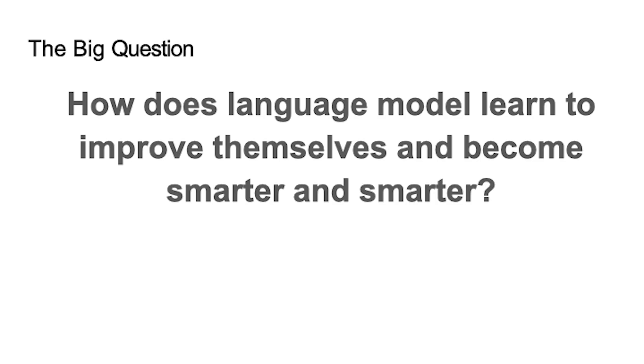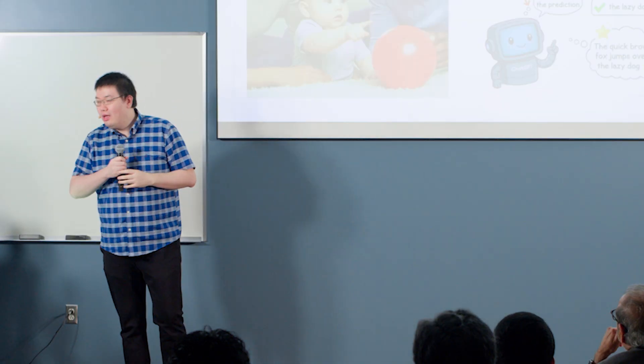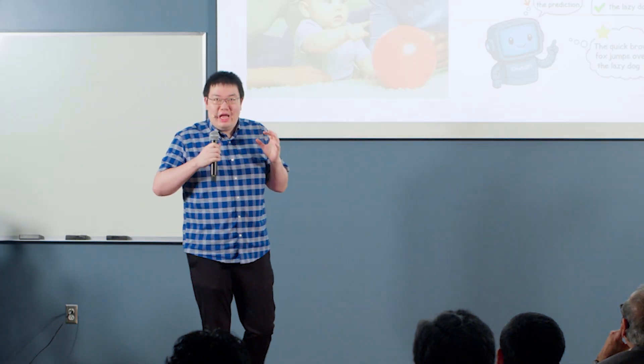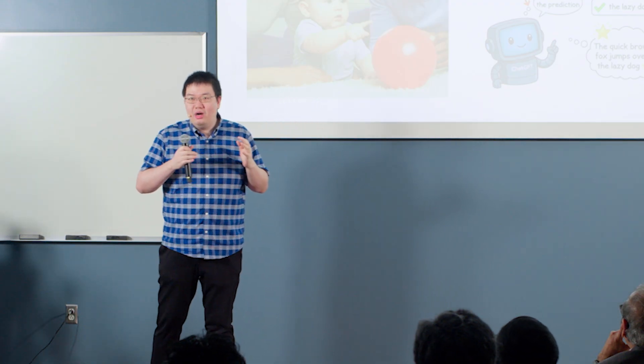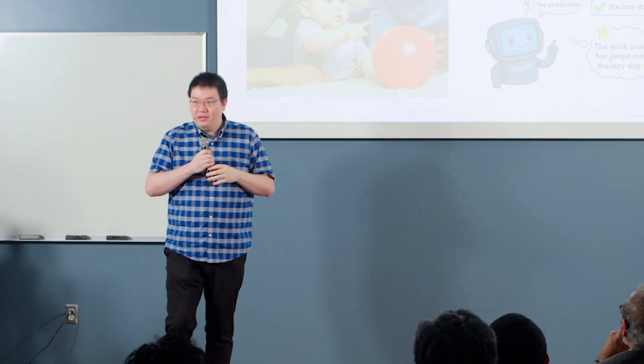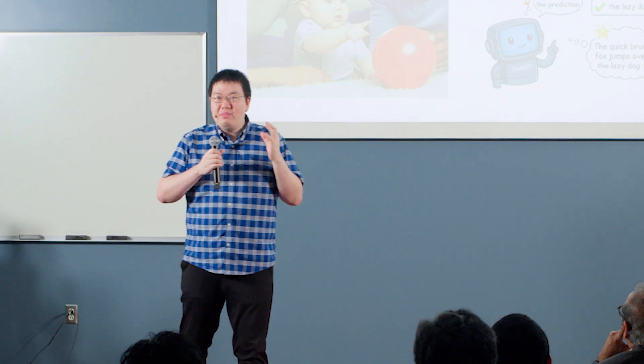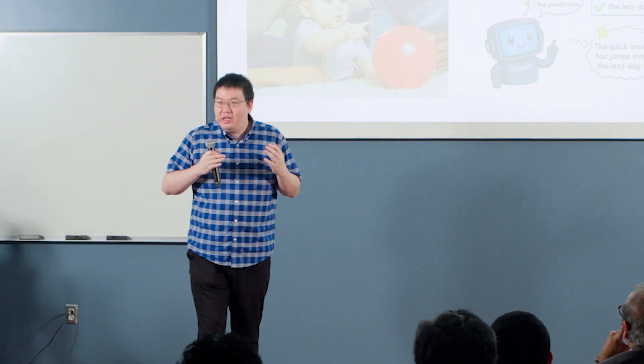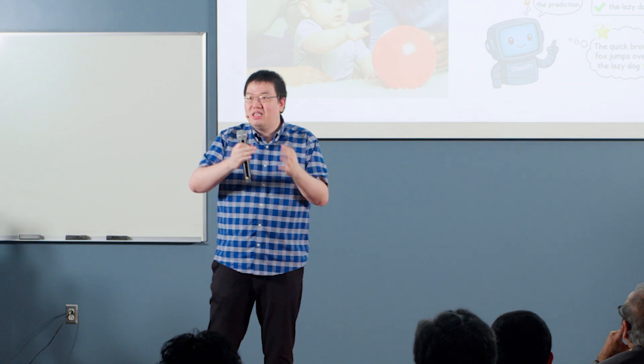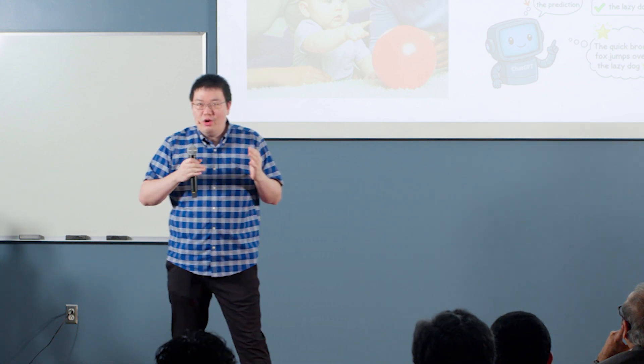So the central question is that, how does this language model learn to improve themselves over time? What's the underlying technology they use to improve themselves? So before I talk about the technology, I'll just give you the underlying idea about the similarity between human learning and machine learning. The key principle is learning from mistakes. You know, when you want to become perfect, you cannot become perfect at the very beginning. You have to learn from some experience. And the experience is nothing but mistakes.